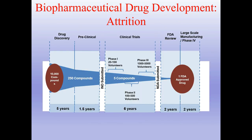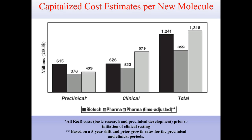This slide explains biopharmaceutical drug development. From 10,000 initial compounds, only one compound reaches approval by the Food and Drug Administration — as an example in the USA. The cost estimates per new molecule show that totally it can cost more than even one billion dollars — in this case, almost one and a half billion dollars — to discover a new molecule.